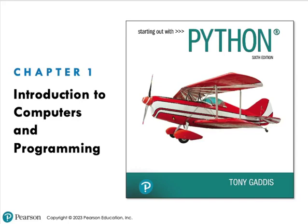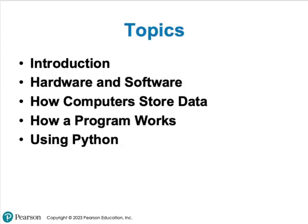This is chapter one from your textbook, entitled Introductions to Computers and Programming. For the most part, almost all this chapter is review of CIT 111 and maybe a little bit of CIT 120. The topics we're going to talk about include an introduction to computing and programming, hardware and software — which should be a review of 111.